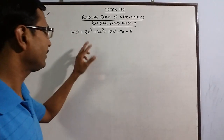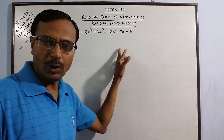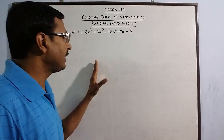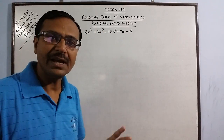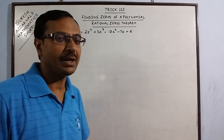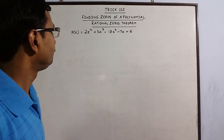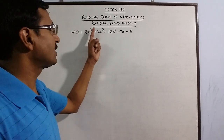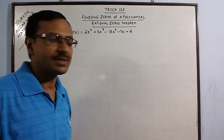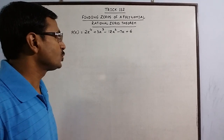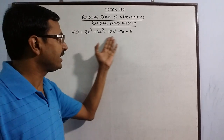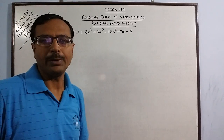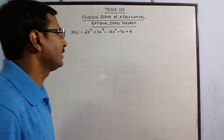We need a method through which we can find the zeros of such a large polynomial. The method we are going to use will involve only rational zeros — we are not dealing with polynomials that have irrational zeros or irrational factors. This theorem is popularly known as the Rational Zeros Theorem, and we are going to use it to find the zeros of this polynomial. Let us start this method.